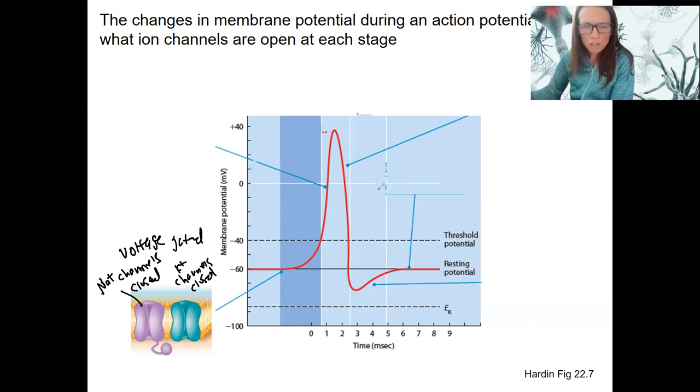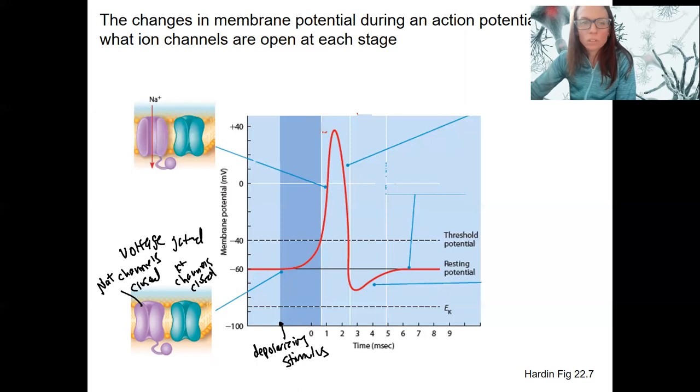When we have our stimulus occur, right here, let me actually draw it on the bottom. This time point right here is our depolarizing stimulus. So sufficient to reach threshold at the axon hillock. This is going to cause the voltage-gated sodium channels to open, causing depolarization.